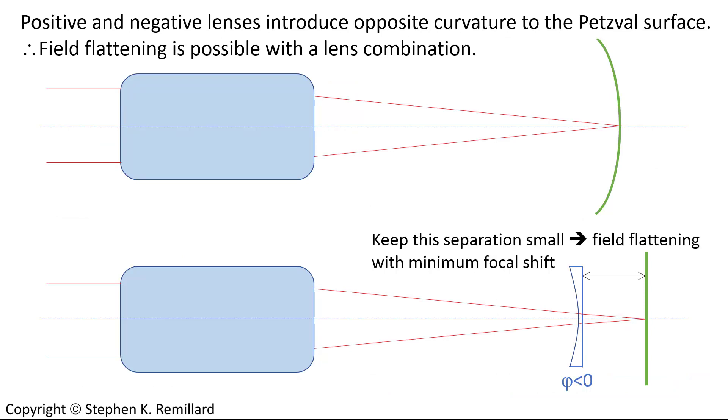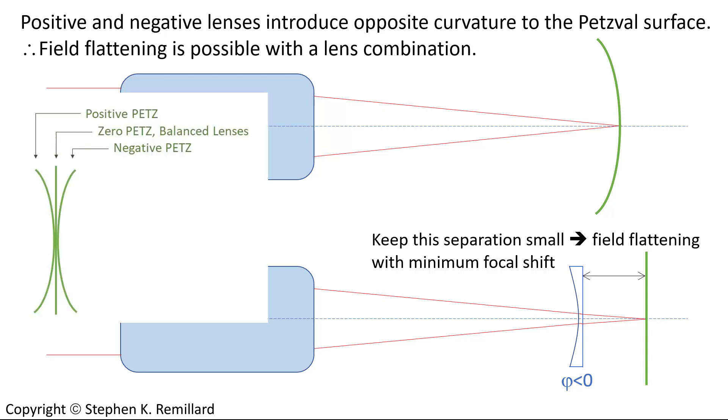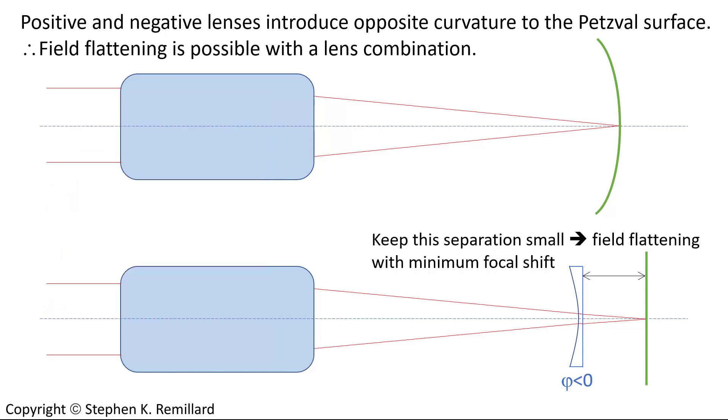Since it's generally undesirable to have field curvature, unless you actually have spherically curved photographic plates and sensors, it's desirable to correct for it. And in order to correct it, let's leverage the fact that positive and negative surfaces result in opposite signs of the Seidel coefficient. By combining positive and negative surfaces, it's possible to flatten the field.